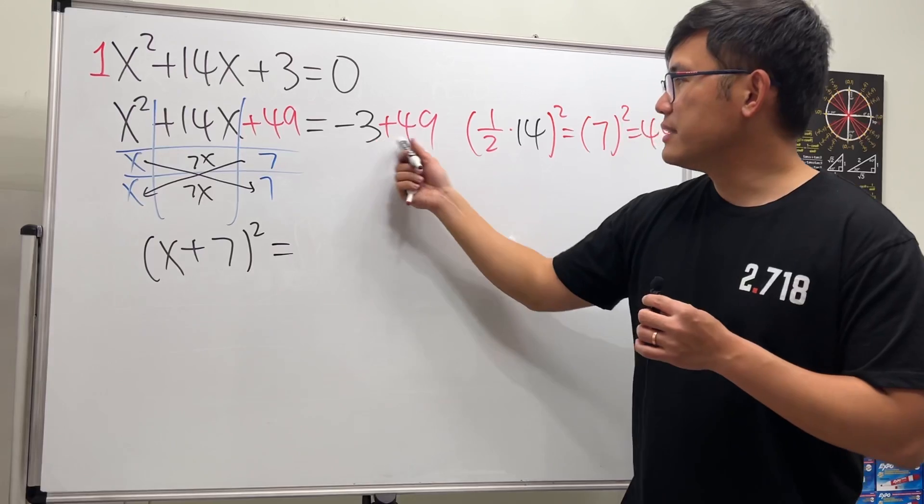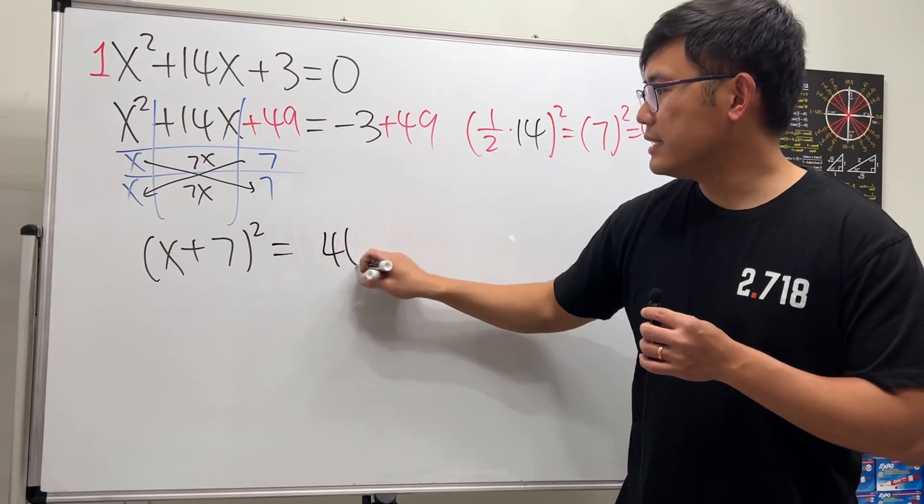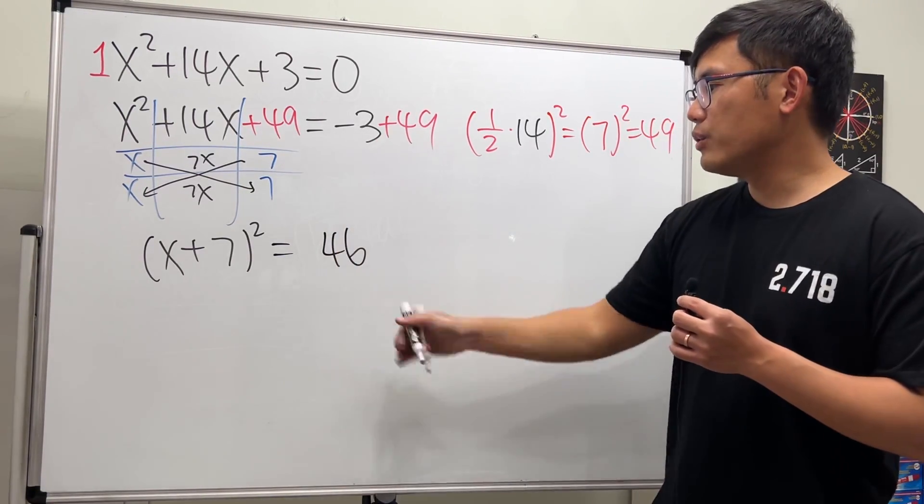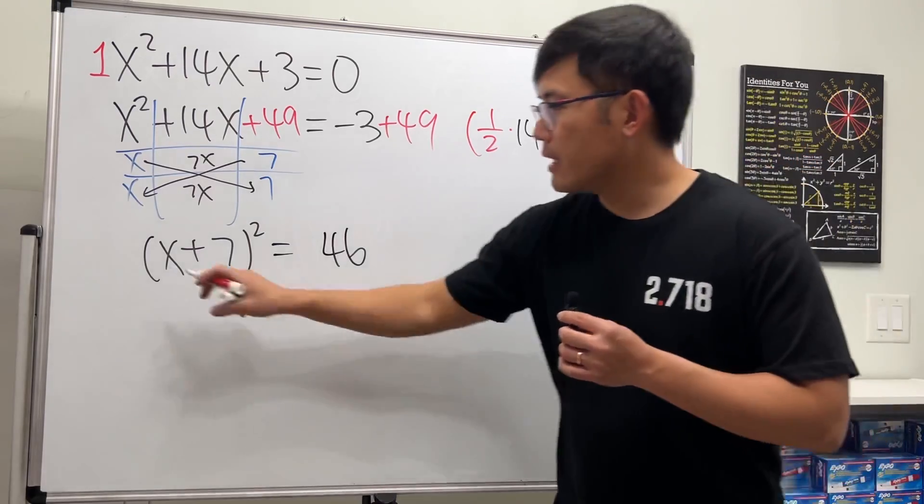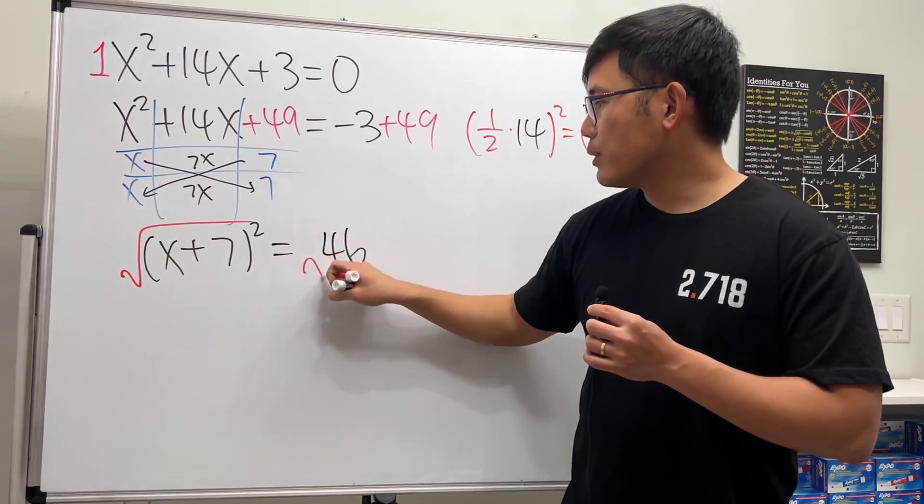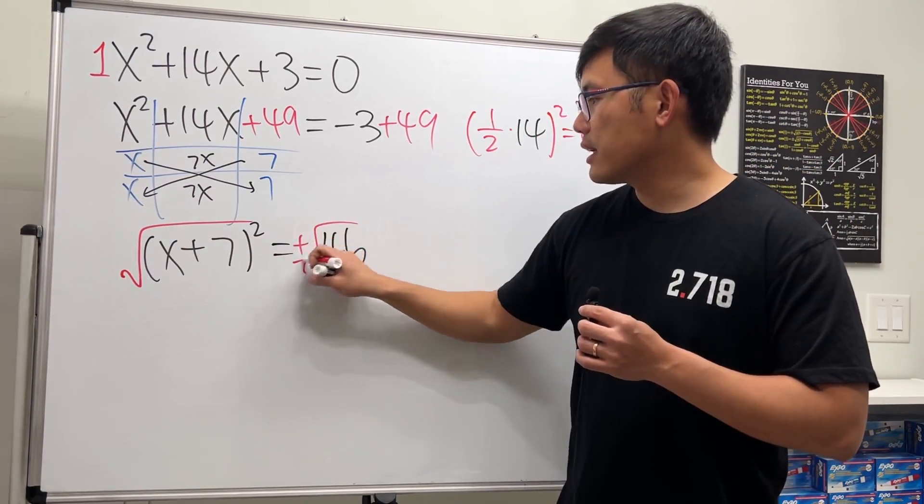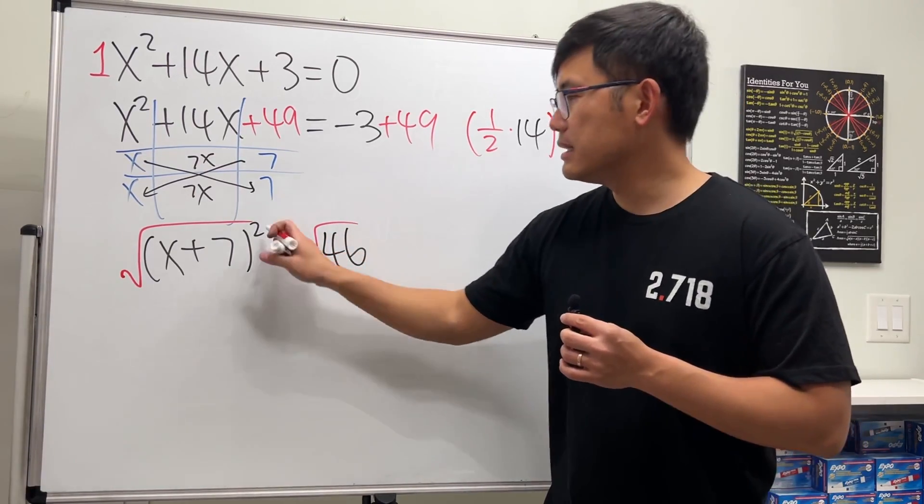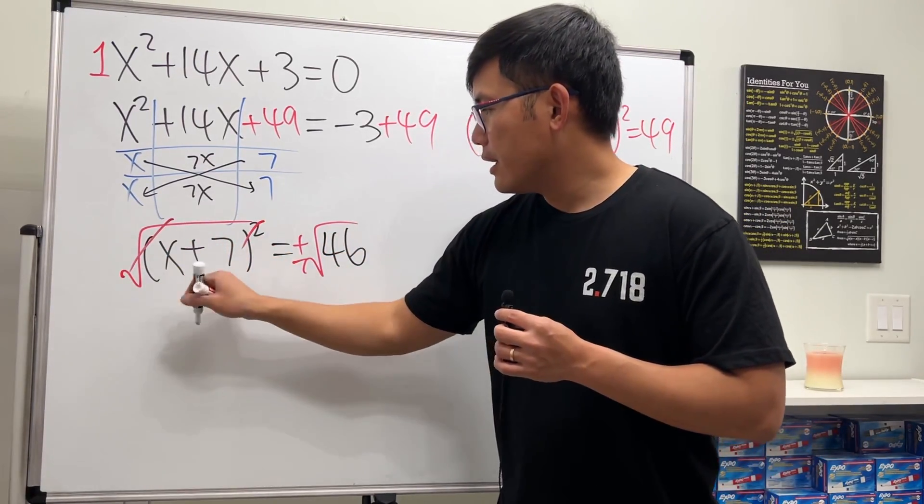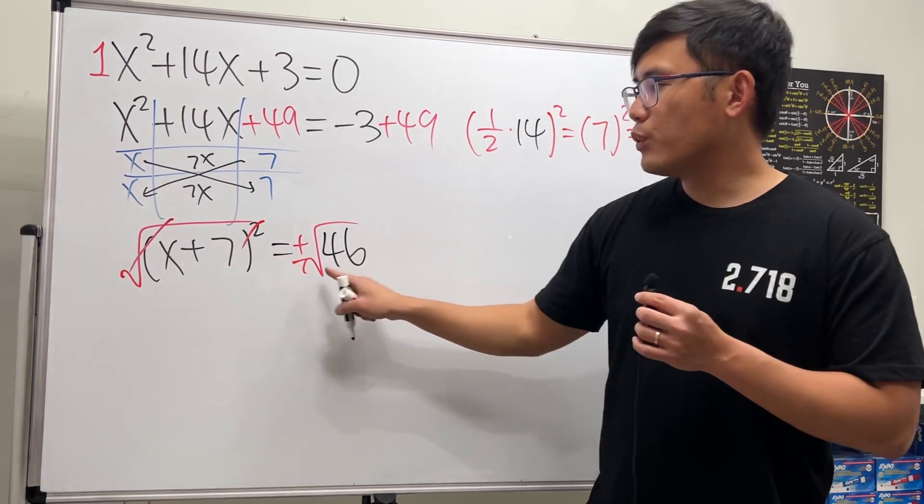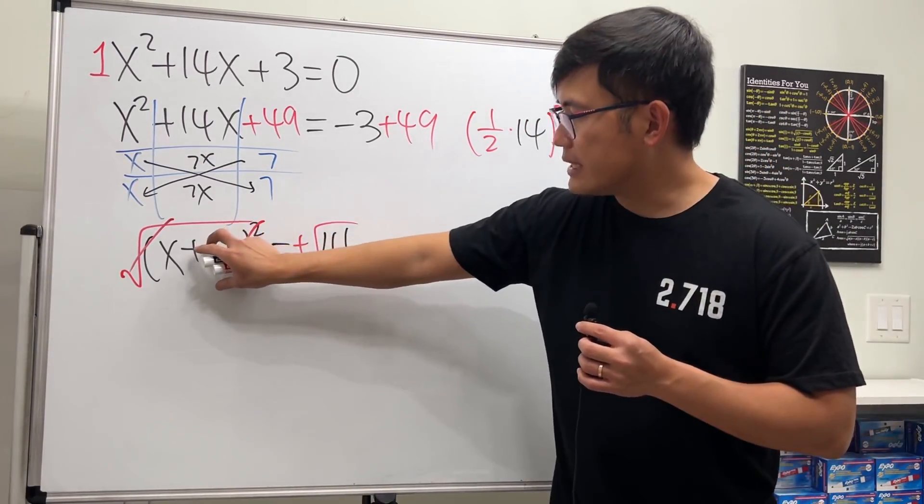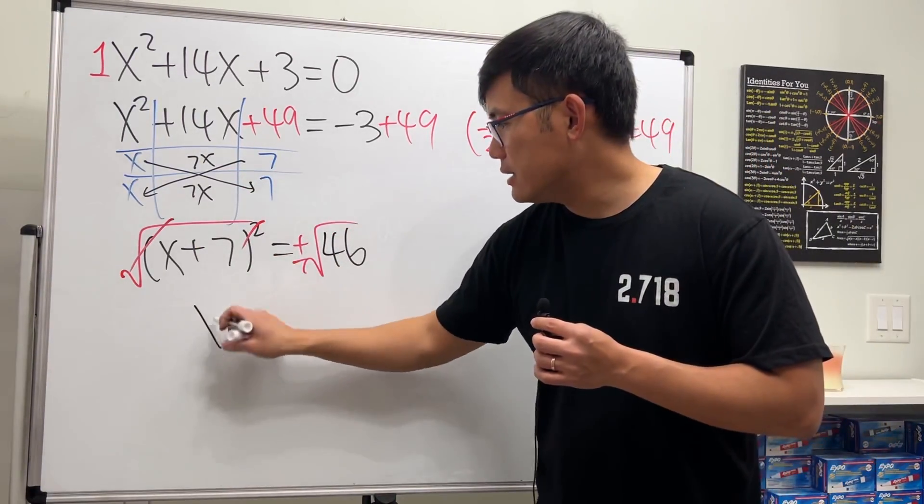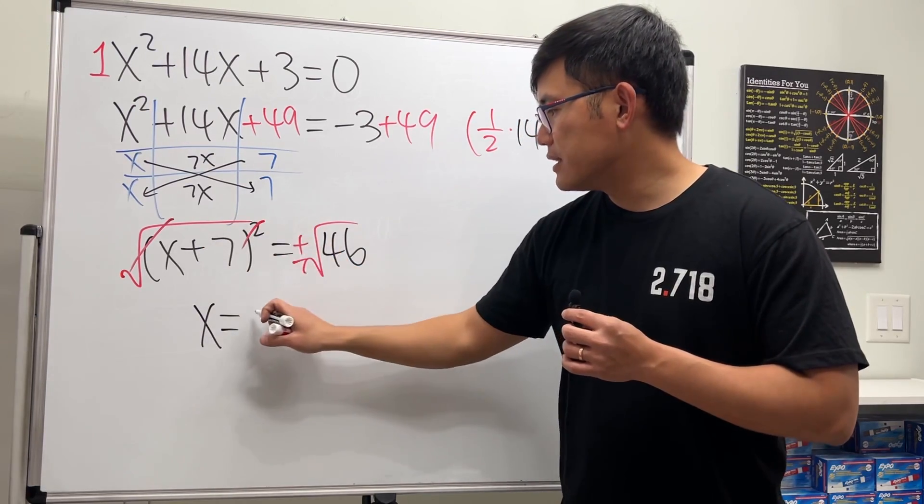Now let's continue. The right-hand side: this and that is positive 46. We can continue because it's a positive number. Then we take the square root on both sides—we get real solutions in this case. Don't forget the plus or minus. Cancel this out, so we have x + 7 equals this. We can put the 7 to the other side, so x equals negative 7...